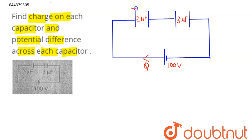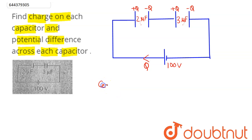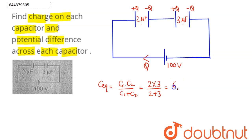We can say both capacitors are in series, as both carry the same charge. To find the charge on each capacitor, let this capacitor be C1 and this be C2. The equivalent capacitance in series is C1 times C2 divided by C1 plus C2. So with C1 = 2 and C2 = 3, divided by 2 plus 3, this comes out to 6 by 5, which is 1.2.